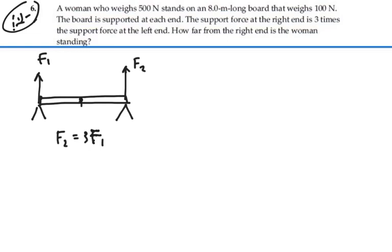We also have weight of the board, which is 100 newtons. And then we have a woman standing somewhere, and she weighs 500 newtons. So let's just say that she's standing some distance X from the right support because we want to find out what that X is.